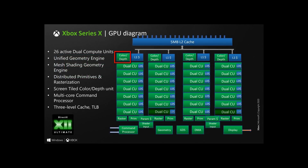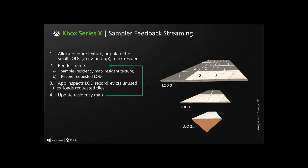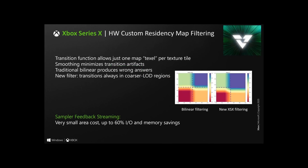The other new addition is a dedicated screen-tiled color and depth unit within each shader array. In theory, this unit allows some of the novel features that Microsoft covered in the Xbox Series X architecture presentation, such as sampler feedback streaming and residency map filtering. These techniques enable faster level of detail tile generation, reduce VRAM pressure or boost effective VRAM capacity, and massively boost effective memory bandwidth.